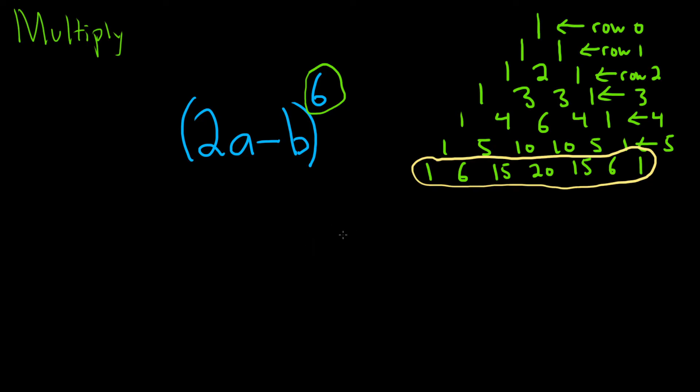Before we use the strategy, which I'm about to show you, it's really important that this is a plus sign. So what we do is we write it as follows. This is really 2a plus, and then it's negative b in parentheses, and it's to the 6th power. Now we're going to go ahead and multiply this out.